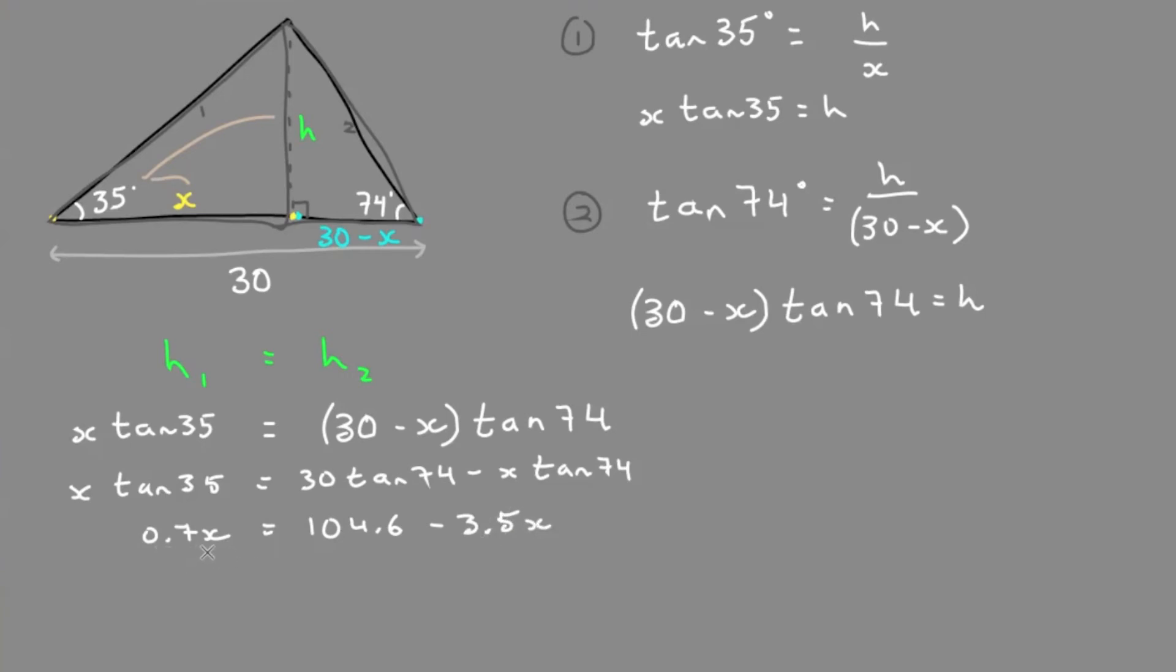We'll collect like terms with the x's, so we have 4.2x equals 104.6, and therefore x equals 24.9.